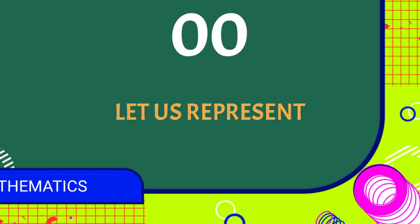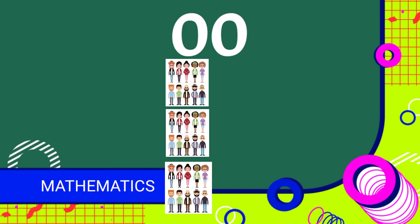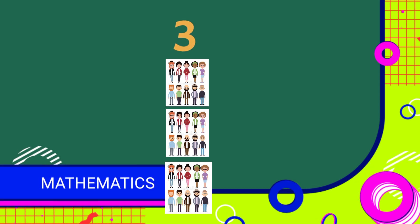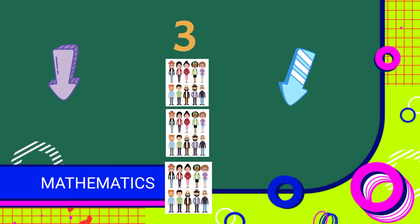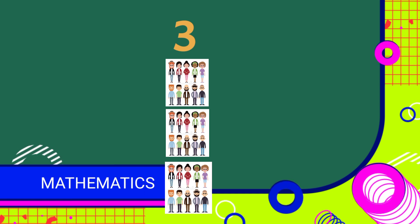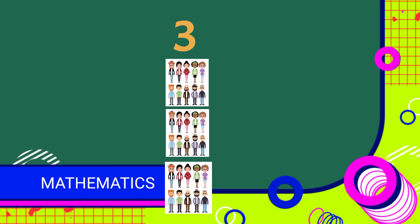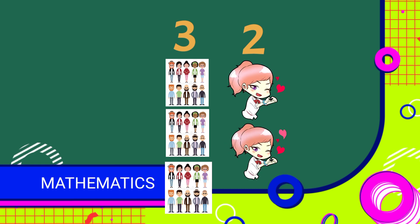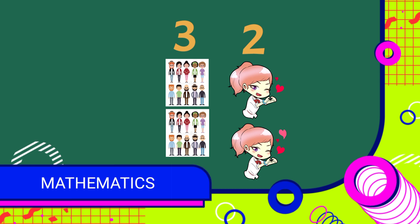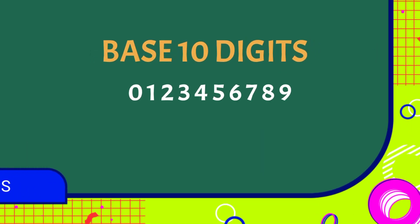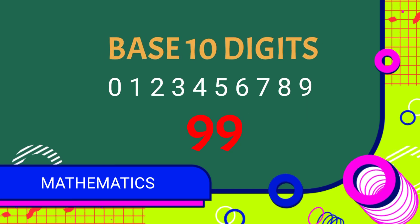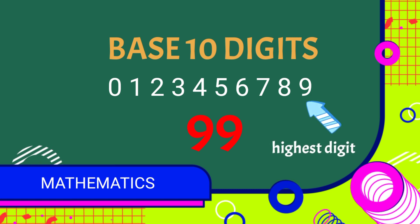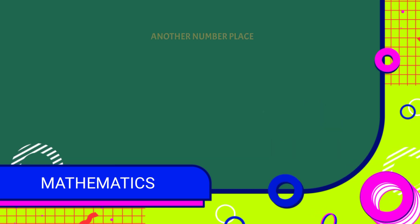Using these 2 number places together, let us represent amounts in between the groups of 10s. For example, if we count 30 persons, we write 3 in the 10s place to represent 3 groups of 10s. And if we count 32 persons, we write 3 in the 10s place to represent 3 groups of 10s, and 2 in the 1s place to represent the 2 persons not in the groups of 10s. In fact, using only our 10 digits and 2 number places, we can count all the way from 0 up to 99. The number 99 has both number places maxed out with the highest digits, and we cannot count any higher unless we create another number place.